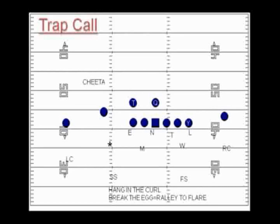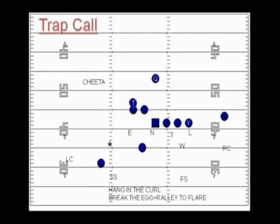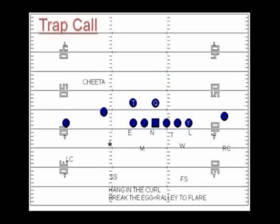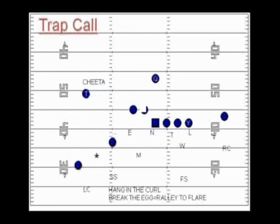Two verticals — we match it up. You can't run two verticals against quarters. You need to do a great job of repping the three over two concepts with trap. Here's the cheetah alert again — two or three relationship crossing. You see number two going across your face, eyes need to go to three for the star. The star picks up number three, the safety and corner drive on the curl by number one. The Mike picks up number three, and on the backside — trap begins with two receivers.